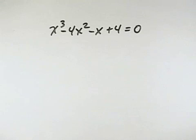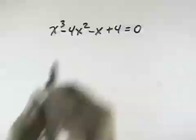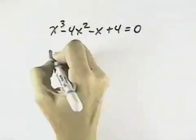We want to solve this polynomial equation. Since there's four terms, we'll try grouping since there is no common factor. So let's try grouping the first two together.